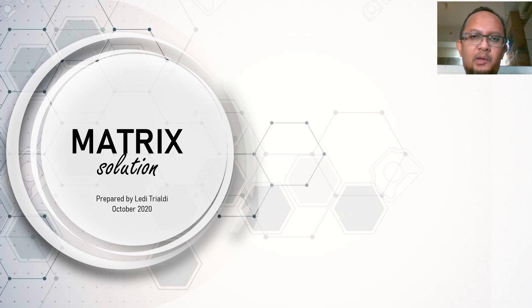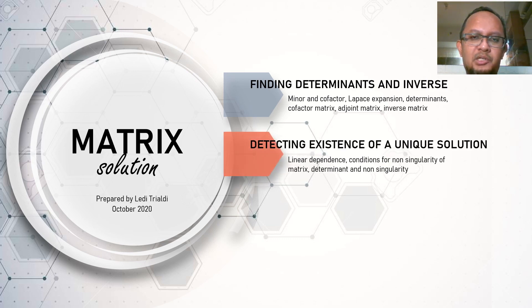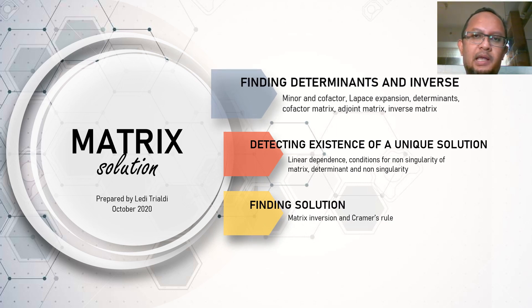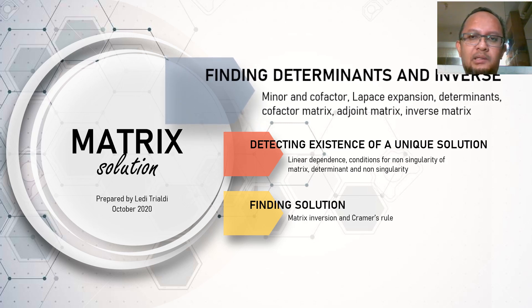We learn how determinants and inverse matrix are obtained before we use them to detect the existence of a unique solution, as well as to find the solution for a particular equation system problem. In this presentation, I will explain the first, while the rest will be presented in different videos.